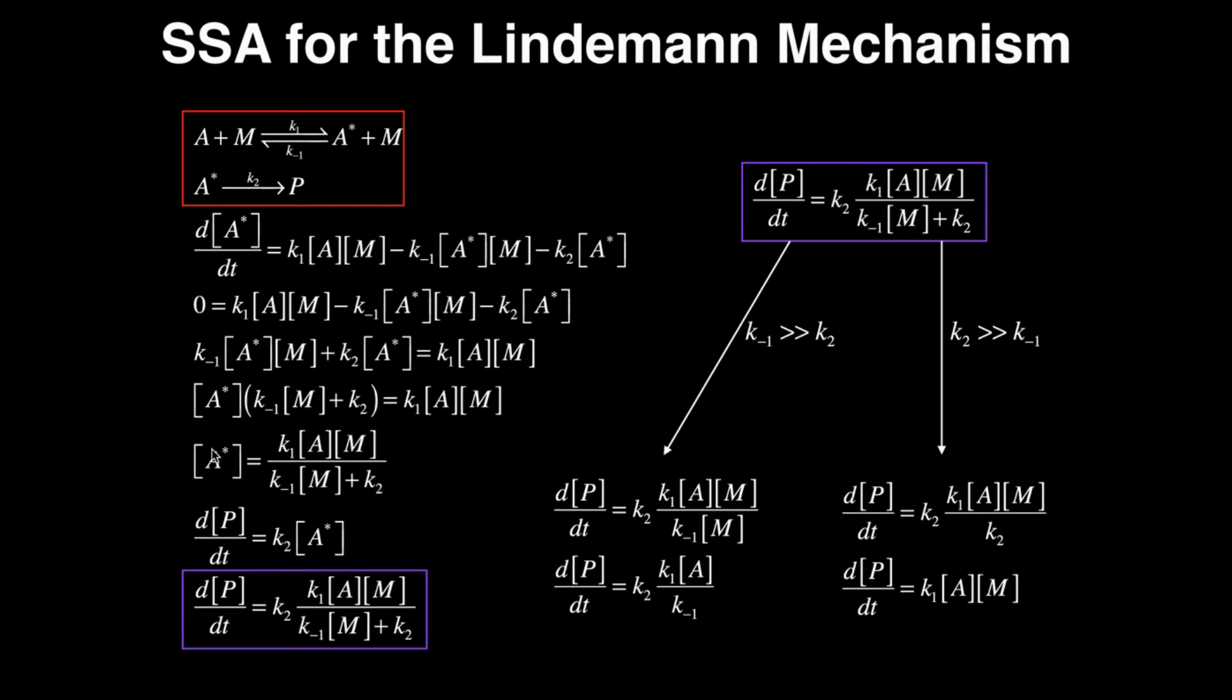But I just found an expression for A star. So my rate of product formation with respect to time, so d[P]/dt is equal to K2, which is just from here, times, I'm going to substitute all this in, K1[A][M] divided by the quantity K-1[M] plus K2.